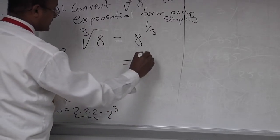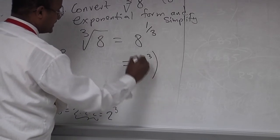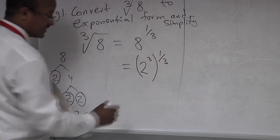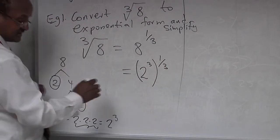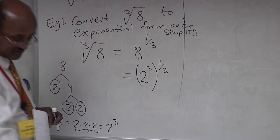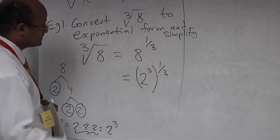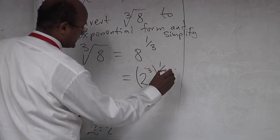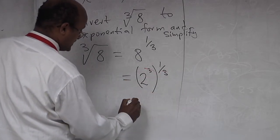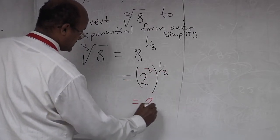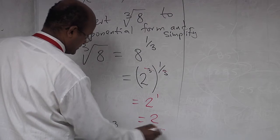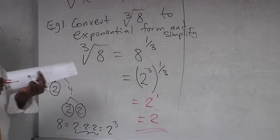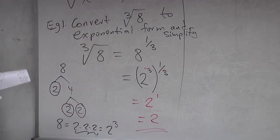You can write this as 2 to the power of 3 times 1 over 3. This cancels out: 3 divided by 3 is 1. So this becomes 2 to the power of 1, which is 2. So the final answer is 2.